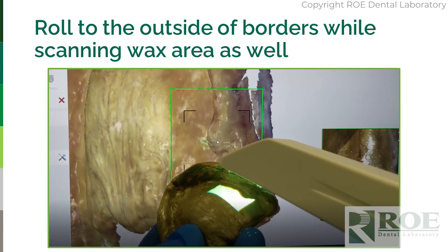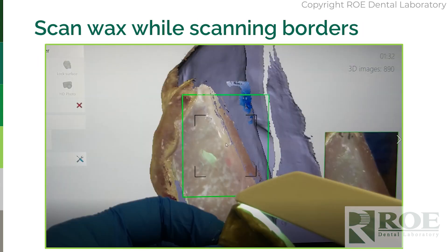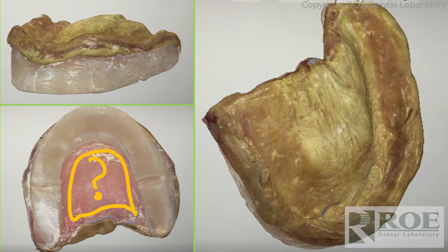Scan all the way around, scan the full border, and then start to roll towards the facial. Again, scan the border and the wax at the same time to capture the full roundness of the wax. Scan all the way around, and then roll over to the occlusion. Some scanners at this point will run out of memory — you do not need to scan the tongue part of the palate; it's not needed. We captured the intaglio and will make a simple calculation to figure out the thickness of the material. Scan the full occlusion and be sure you've scanned the posterior distal area of the denture.